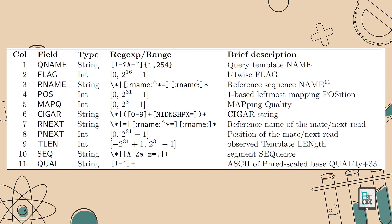The SAM file contains tabular data stored according to field, type, range, and basic information. QNAME is the query template name — the name of whatever sequence you are aligning.